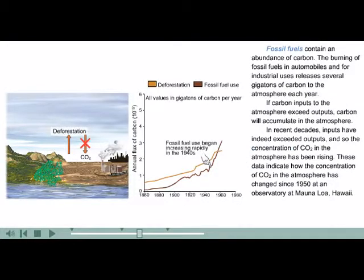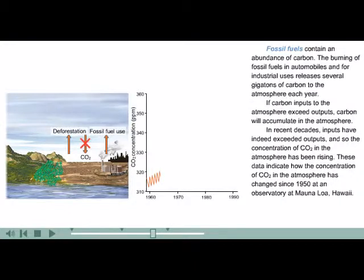Fossil fuels contain an abundance of carbon. The burning of fossil fuels in automobiles and for industrial uses releases several gigatons of carbon to the atmosphere each year. If carbon inputs to the atmosphere exceed outputs, carbon will accumulate in the atmosphere. In recent decades, inputs have indeed exceeded outputs, and so the concentration of carbon dioxide in the atmosphere has been rising.